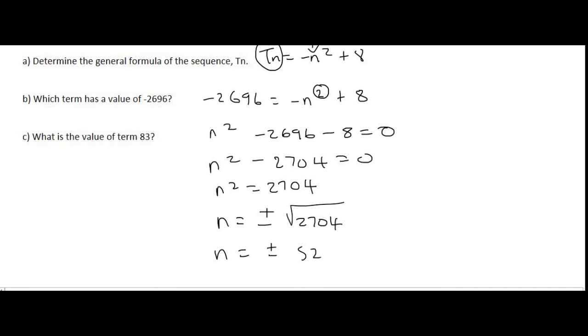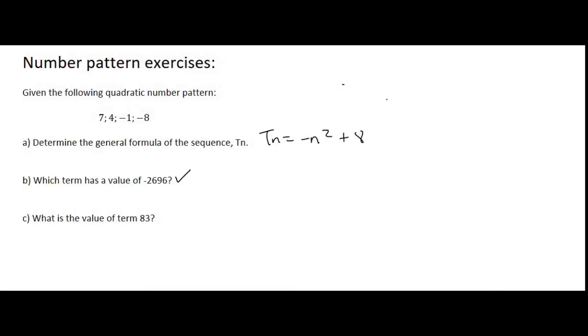And when you do that on the calculator, you're going to get an answer of plus or minus 52. But then we need to remember that N cannot be a negative because N stands for position. And you can't have a negative position. So therefore, N will be 52.